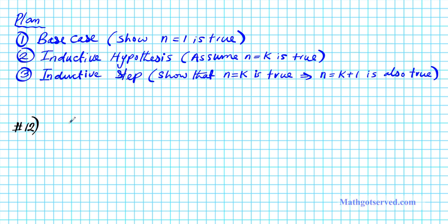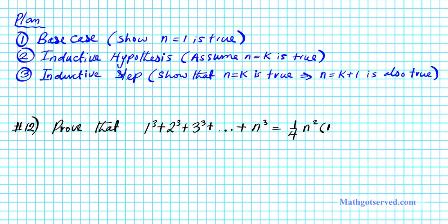For number 12, we have to prove that 1³ + 2³ + 3³ + ··· + n³ equals (1/4) · n² · (n+1)². Now in some textbooks, the right side is written as [n(n+1)/2]², the entire expression squared. These two are exactly the same thing, because when you distribute the square, in the numerator you have n² and (n+1)², and when you square the 2 in the denominator you have 4. So this proof is applicable to both forms — they are exactly the same thing.